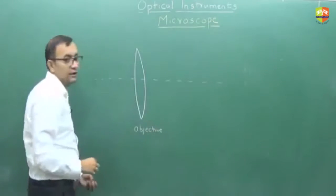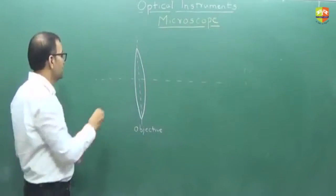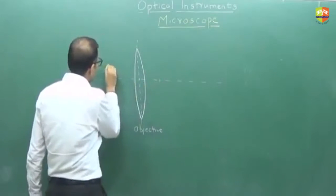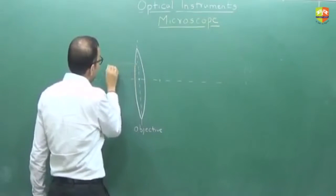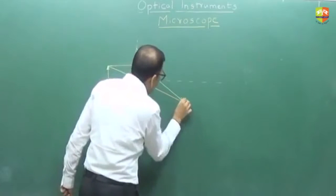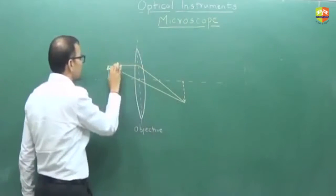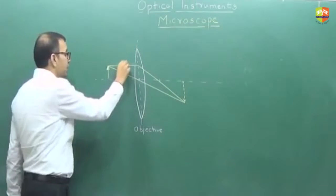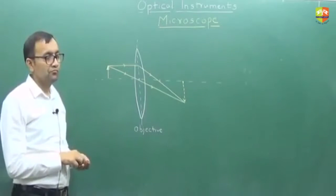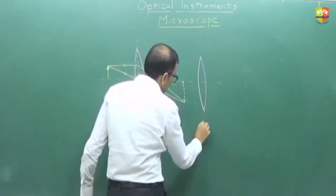Suppose this is the objective. And suppose this is your object. The image of this object gets formed somewhere here. Draw this ray diagram. And here you have another lens — this is called the eyepiece.